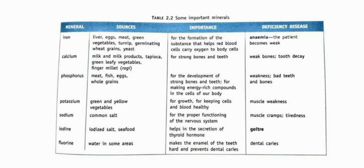Now we will look at minerals. First is iron. The sources are liver, eggs, meat, green vegetables, turnip, germinating wheat grains, and yeast. Iron is important for the formation of a substance that helps red blood cells carry oxygen to body cells. The deficiency disease is anemia, and patients become weak.